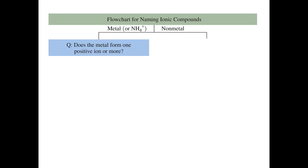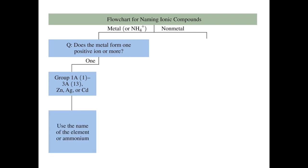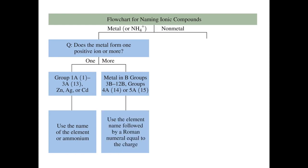Let's focus first on the cation. You first ask yourself, does the metal form one positive ion or does it form more? If your answer is one, and that's because it's a metal that is in group 1A, group 2A, group 3A, or if it's zinc, silver, or cadmium, then you just use the name of the element. Or if it's ammonium, you just use the name of ammonium. Or if you answer that it can form more than one positive ion because it is a transition metal or in group 4A or in group 5A,